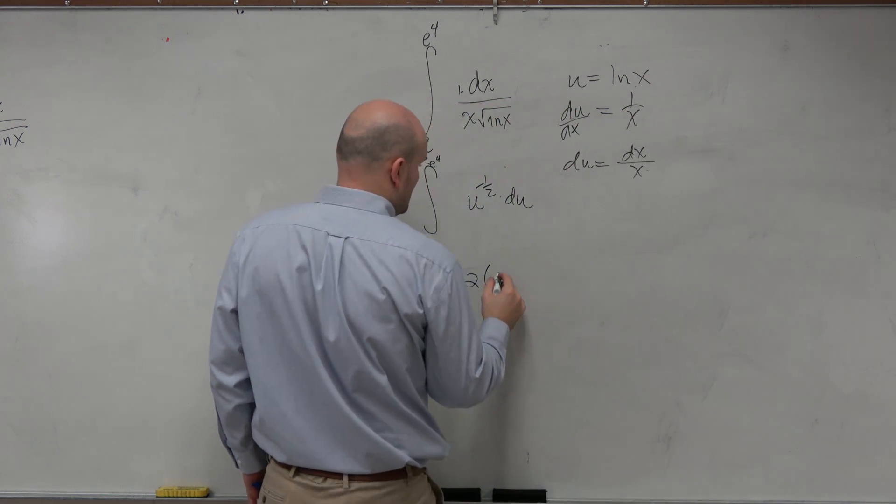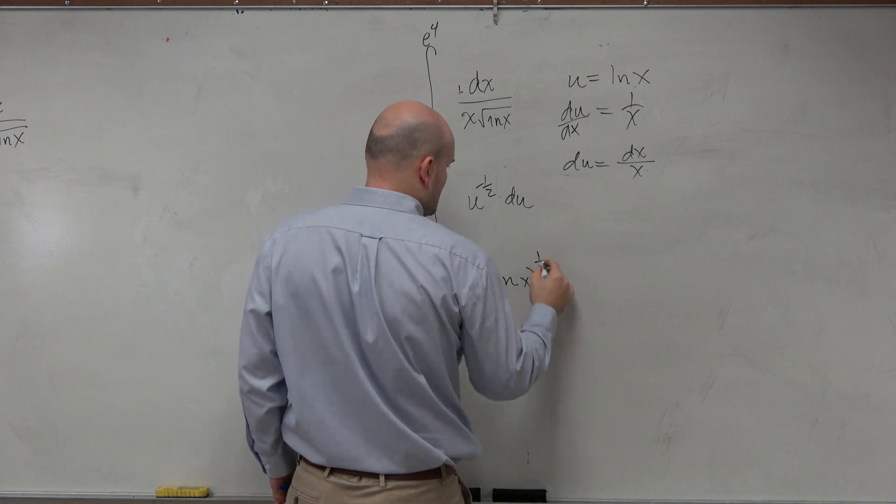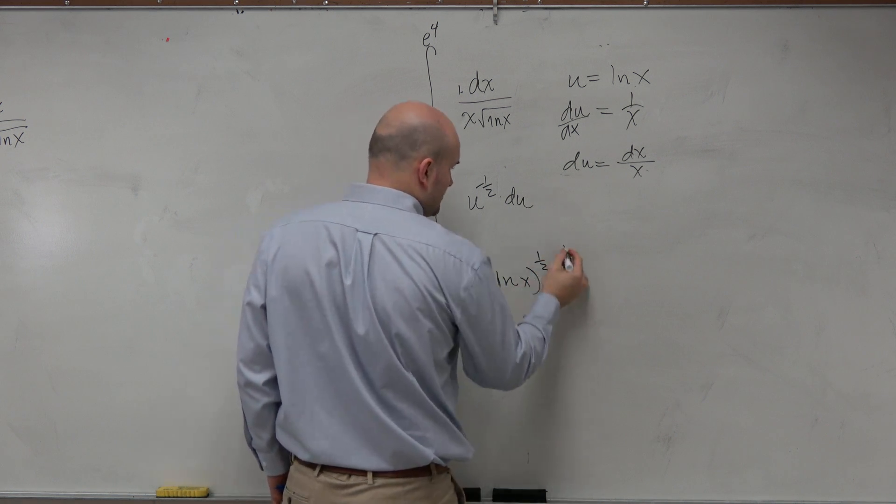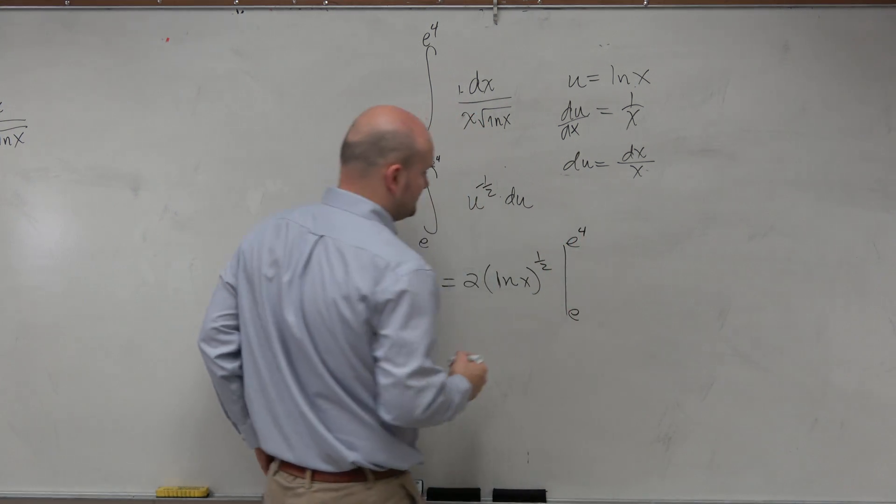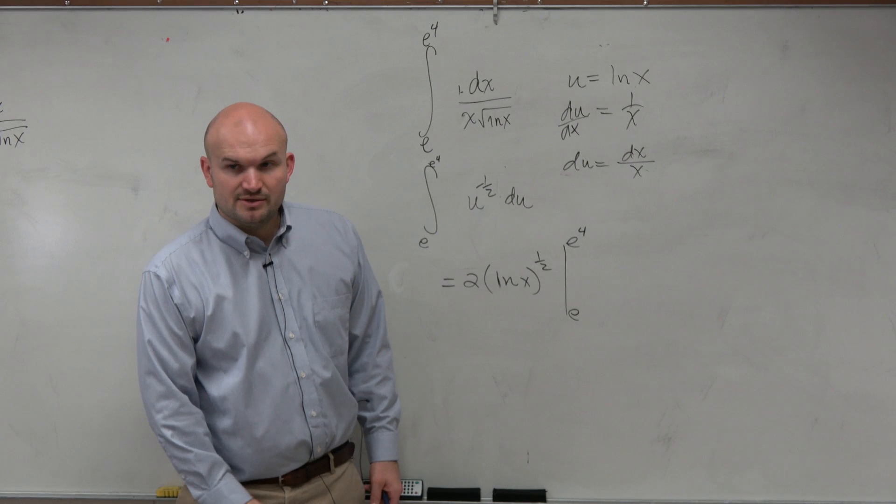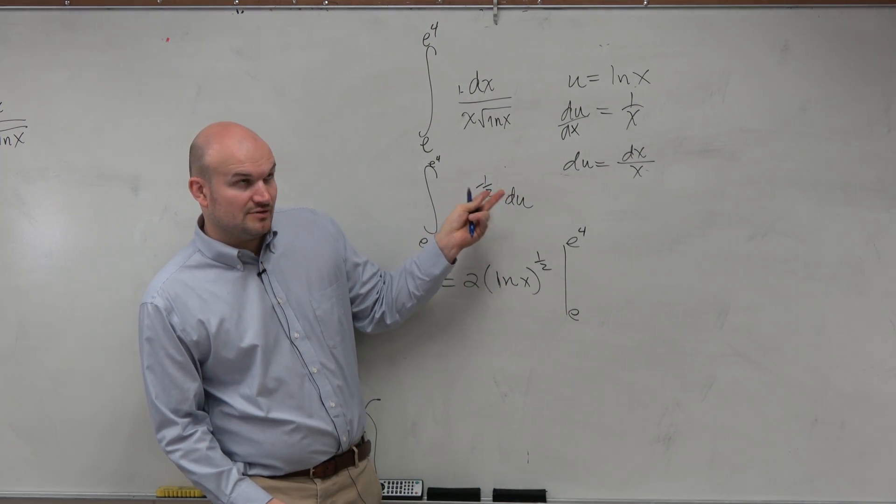And then I plug the u back in. So therefore, I'd have 2 ln of x to the 1 half power, not plus c, because we're evaluating it from e to the fourth to e.